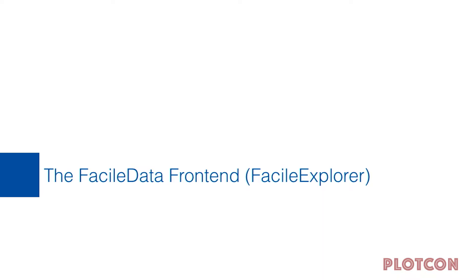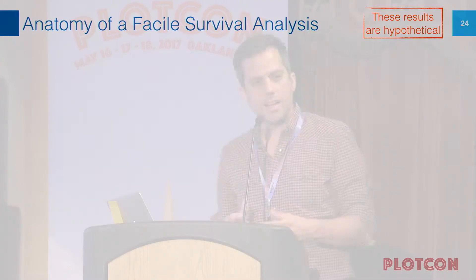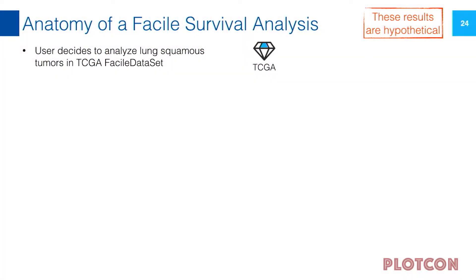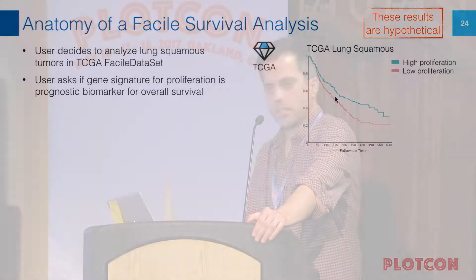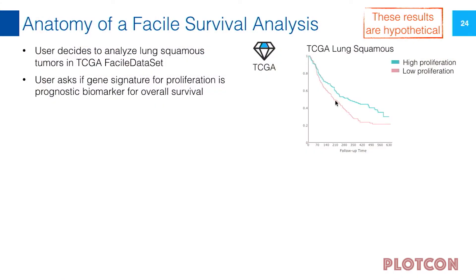With that in mind, this defines the anatomy of an analysis inside the FASIL Explorer. I'll give you an overview of a survival analysis. The biologist comes in and wants to analyze something about lung squamous tumors in the TCGA dataset. They ask whether their favorite gene signature for proliferation is prognostic for survival — if tumor cells are proliferating faster, would you expect outcomes to be better or worse? We split patients into high and low proliferation score groups, and the survival plot shows that as the line goes down faster, the worse it is for patients.